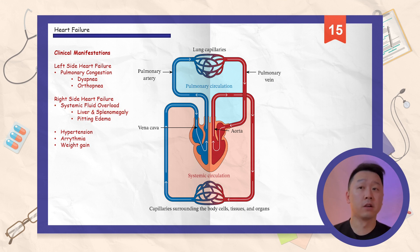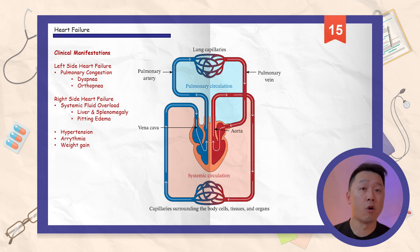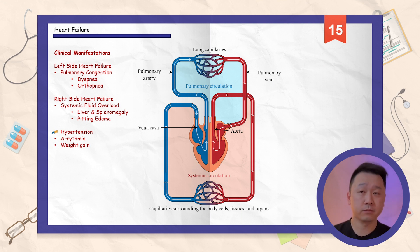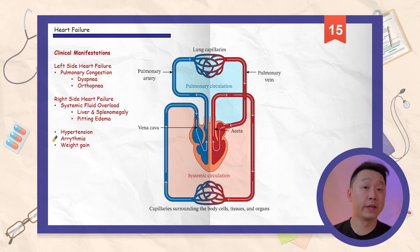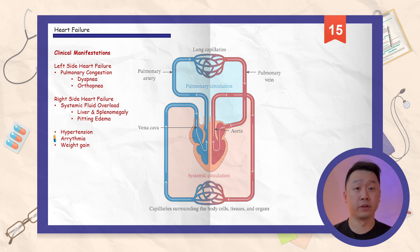Along with these clinical presentations are non-specific findings that may occur in both right and left-sided heart failure, which include weight gain, hypertension, and arrhythmia. The stretching of cardiac tissue through hypertrophic changes may lead to dyssynchrony, which may contribute to arrhythmia.